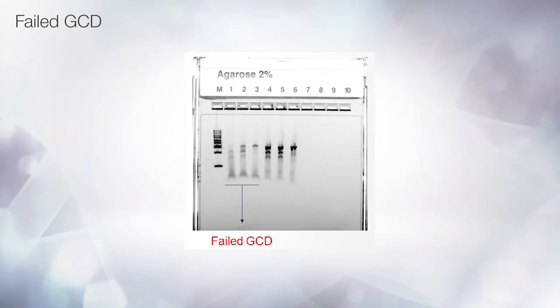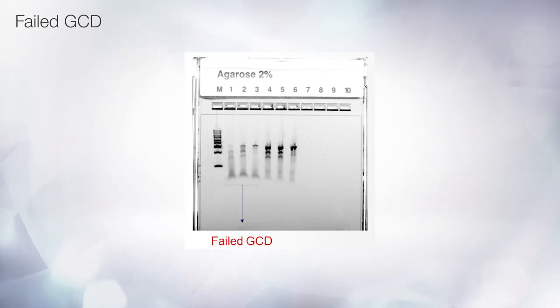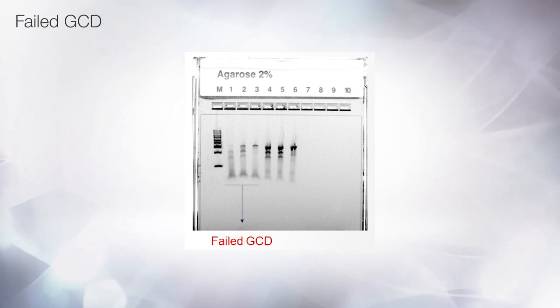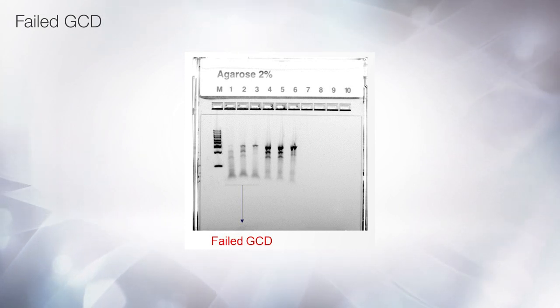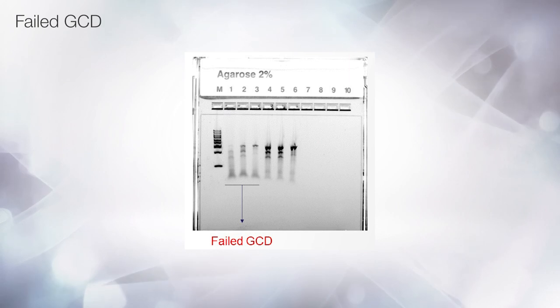The cleavage efficiency can be calculated using the GCD kit manual. If no cleavage is observed for your experimental samples, either transfection conditions weren't efficient for the cells, the cell health was compromised during the experiment, or the cell lysis was not complete.